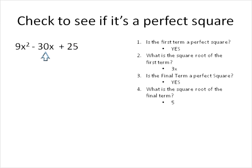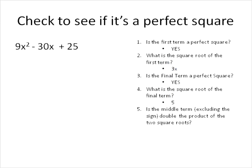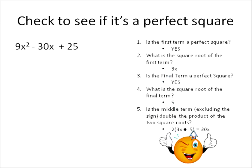The middle term is the most complicated. What we do with the middle term is we take the results from questions 2 and 4 — we take 3x and 5 in this case — and we double their product. So 3x times 5, then double that. 3x times 5 is 15x, and we double that: 15 times 2 is 30, so we get 30x. Forgetting about the sign, is 30x the absolute value of our middle term? Yes it is. So we've got the thumbs up on that one.